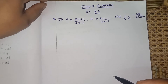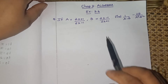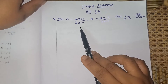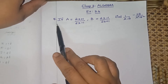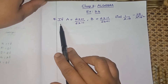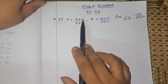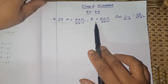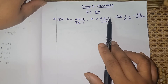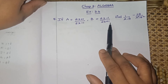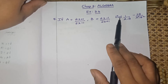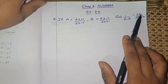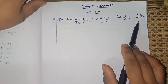Welcome to LoveMax channel. Chapter 3, Algebra, Exercise 3.6 — a very important sum. Fifth sum: if capital A is equal to (2x+1)/(2x-1), capital B is equal to (2x-1)/(2x+1). Find 1/(A-B) minus 2B/(A²-B²).